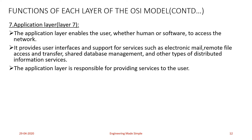For example, when you switch on your PC, it runs an operating system, which is an Application layer protocol that helps us access the functions provided by our personal computer. Similarly, when you type www.google.com on the internet, a web application server — the World Wide Web — from Google will allow us to access the content or web pages stored in its database.